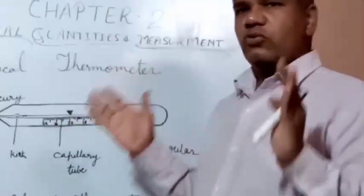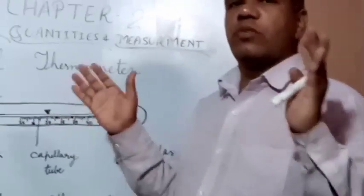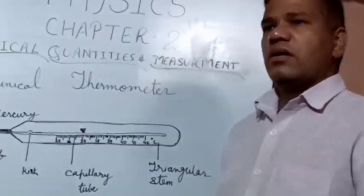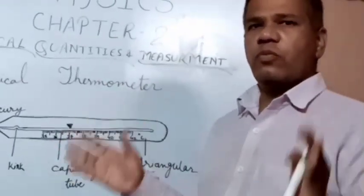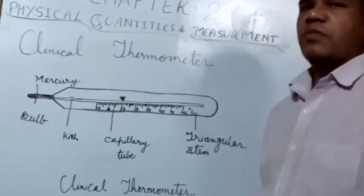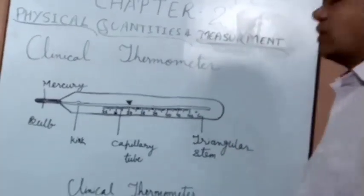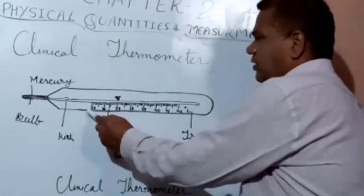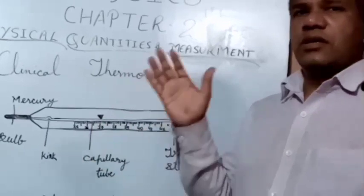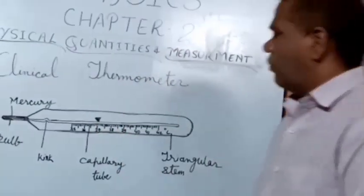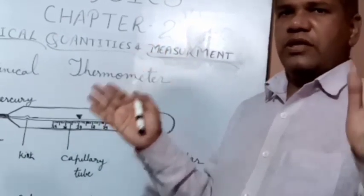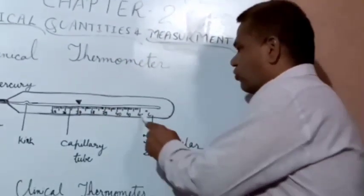My next topic is the clinical thermometer. The thermometer used to measure the temperature of the human body is called a clinical thermometer, or doctor's thermometer. The normal temperature of a human being is 37 degree Celsius. The clinical thermometer is marked from 35 degree Celsius to 42 degree Celsius, because the temperature of the body does not fall below 35 degree Celsius or rise above 42 degree Celsius.